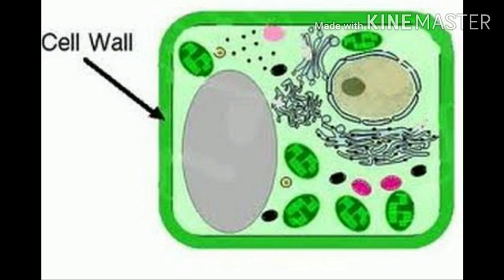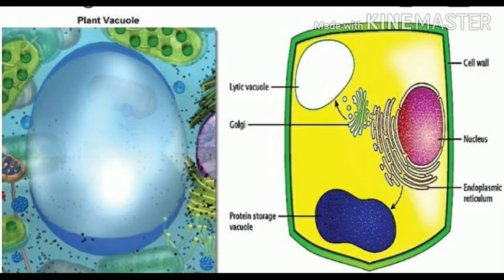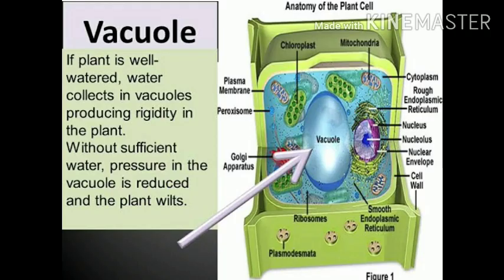Another organelle which is very large and prominent in plant cell is the vacuole. It is a fluid-filled sac that stores food, water and waste, occupying the majority of space in the plant cell. Animal cells have more than one vacuole but they are very small in size.